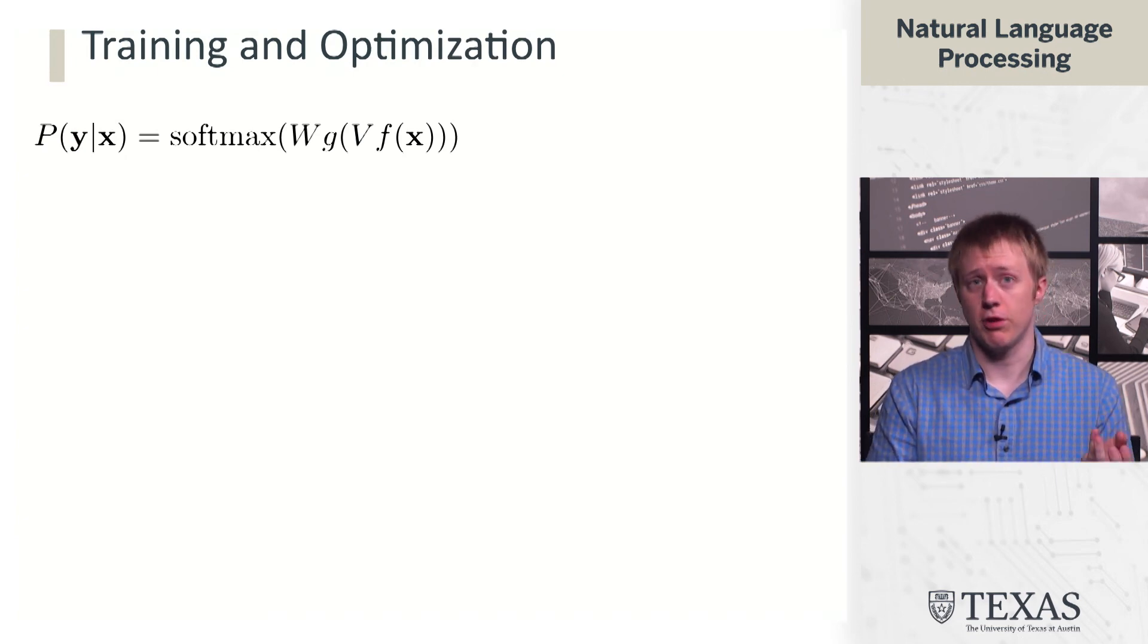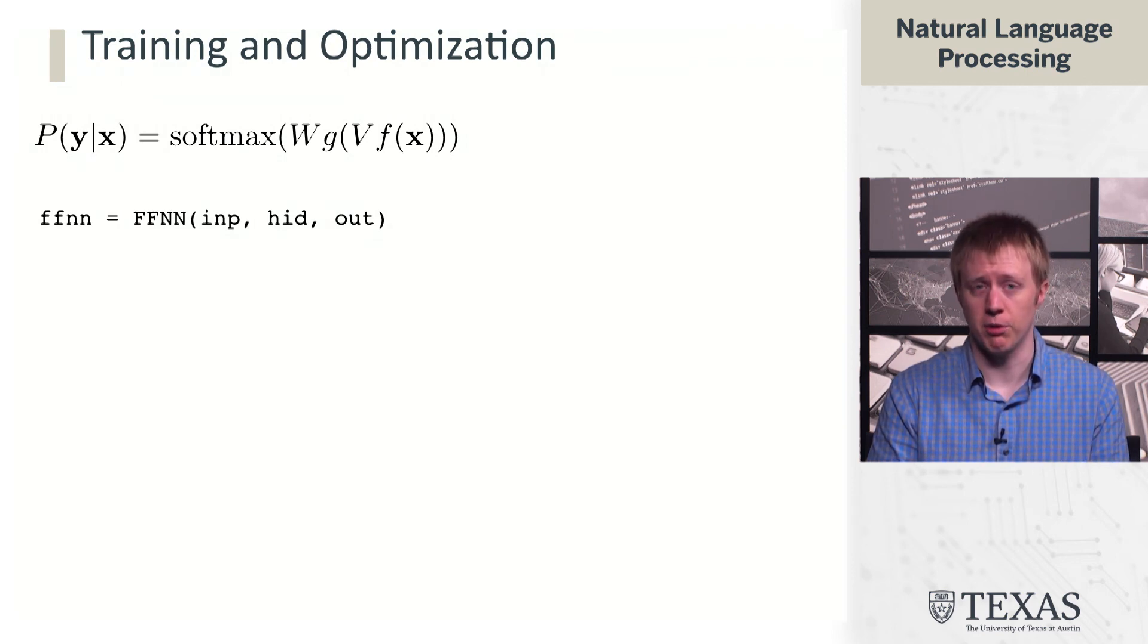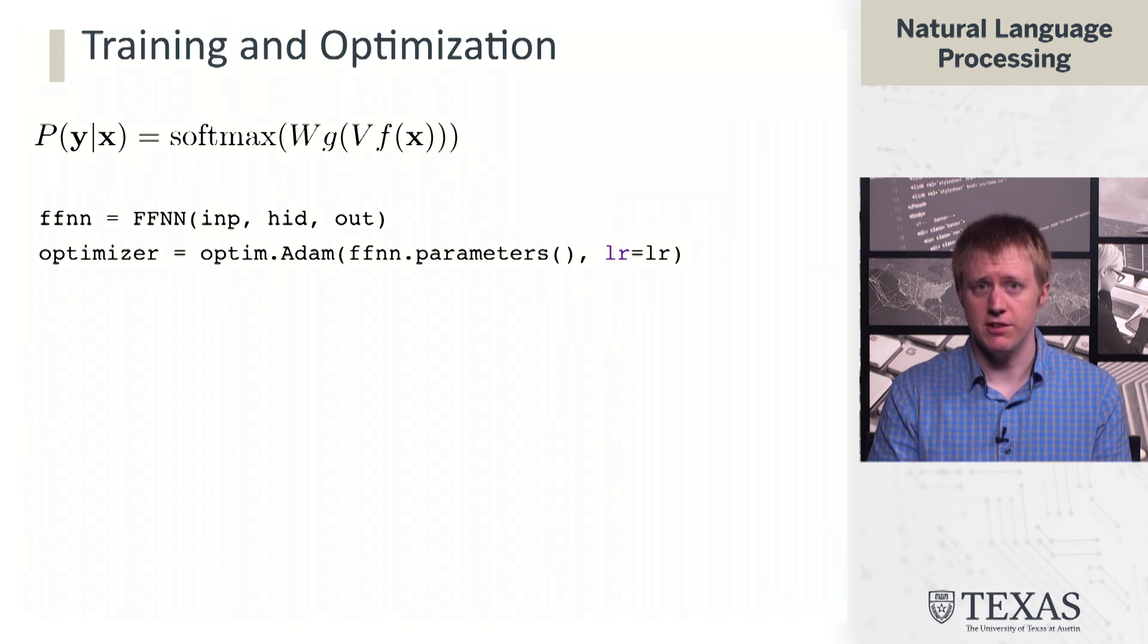In terms of training this network, we can instantiate it. This calls back to what was on a few slides ago showing the definition of this feedforward network. So we instantiate it with sizes for the input layer, the hidden layer, and the output layer. And then we instantiate an optimizer. We're going to talk about optimization a little bit more later. Here we're going to be using an optimizer called Adam, which is going to operate over the parameters of this network and use a particular learning rate.